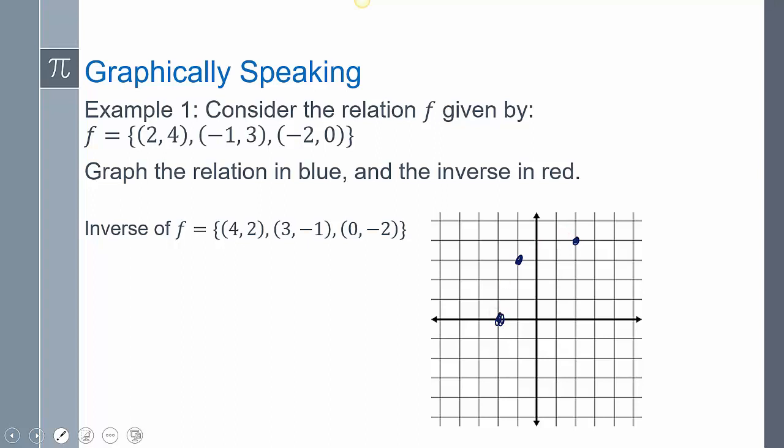Well, the inverse, all I did is switch the x and y's. So switched, switched, switched, switched, and then I can plot these values like 4, 2, 3, negative 1, and 0, negative 2. Now notice, if I draw on this line, that line is y equals x. It looks like if I were to fold my graph over that line, those dots will overlap.